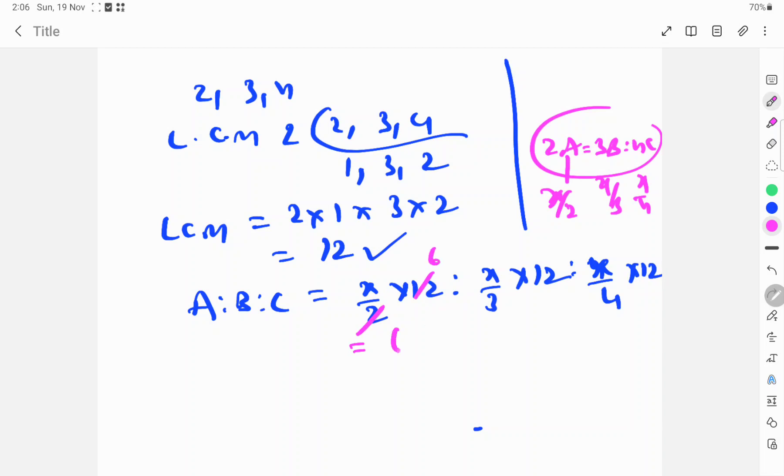2 sixes are 12, so 6X. 3 fours are 12, so 4X. 4 threes are 12, so 3X. X, X, X cancel. This is 6 is to 4 is to 3, which equals A is to B is to C.